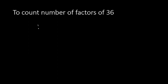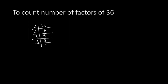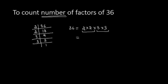To find out the number of factors of 36, first of all we have to do the prime factorization of 36. So 2 times 18 is 36, 2 times 9 is 18, 3 times 3 is 9, and 3 times 1 is 3. So we write 36 as 2 × 2 × 3 × 3. We then write these factors in exponential form: 2 is multiplied 2 times, so we write 2 raised to power 2, and 3 is multiplied 2 times, so we write 3 raised to power 2. So the exponents of these factors are 2 and 2.